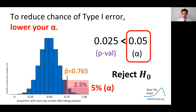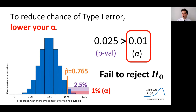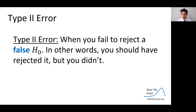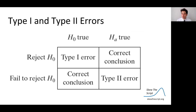However, reducing alpha makes it harder to reject the null — it raises the bar of evidence, which can lead to what we call a type 2 error. That's when you fail to reject a false null hypothesis — in other words, you should have rejected it, but you didn't. Here's a table describing these two errors, and it's useful to study before the AP exam.